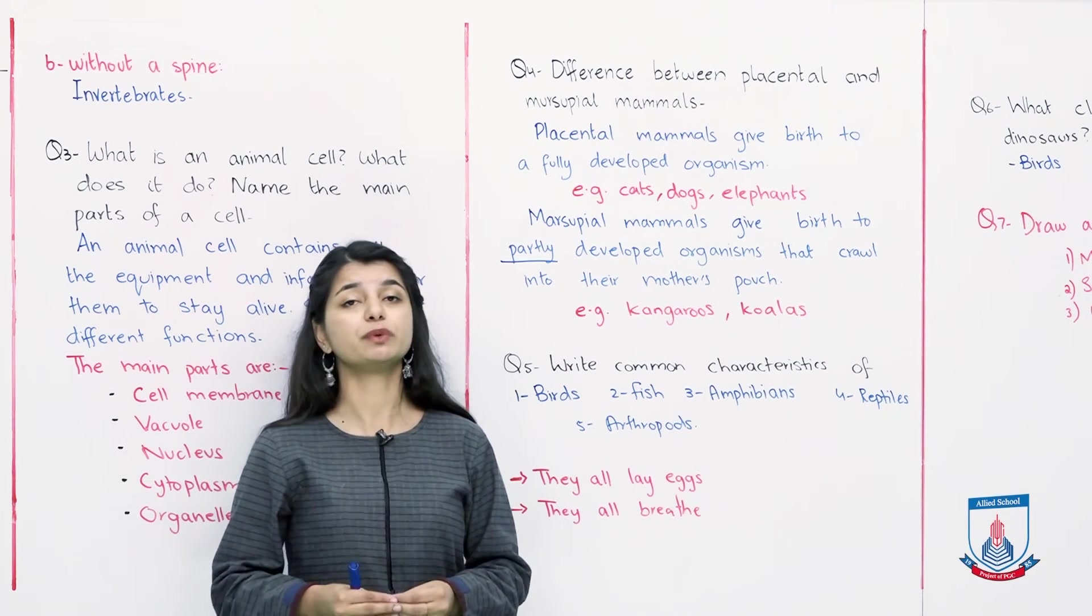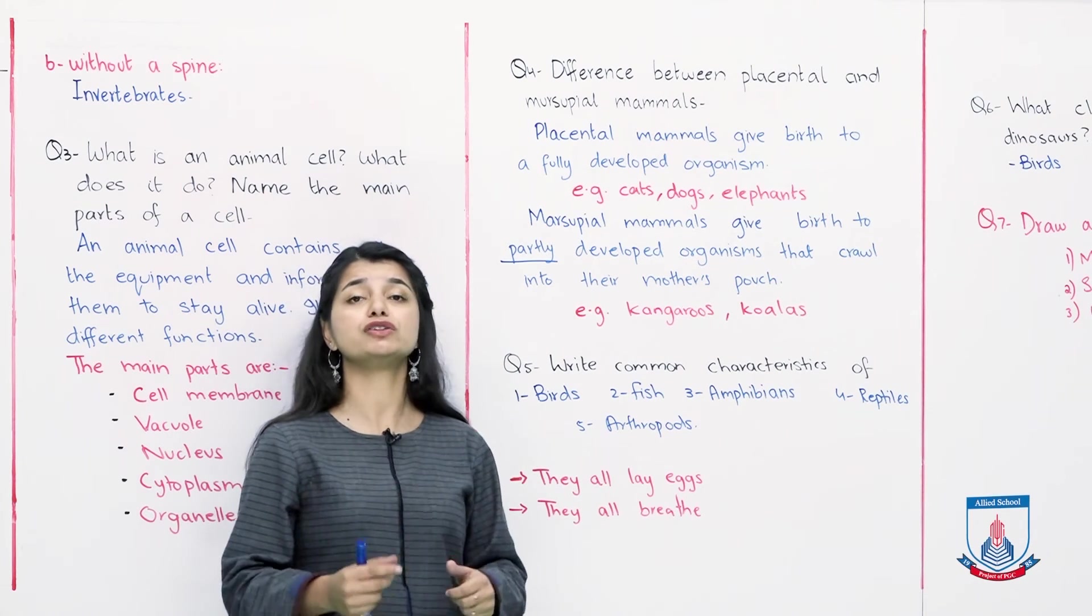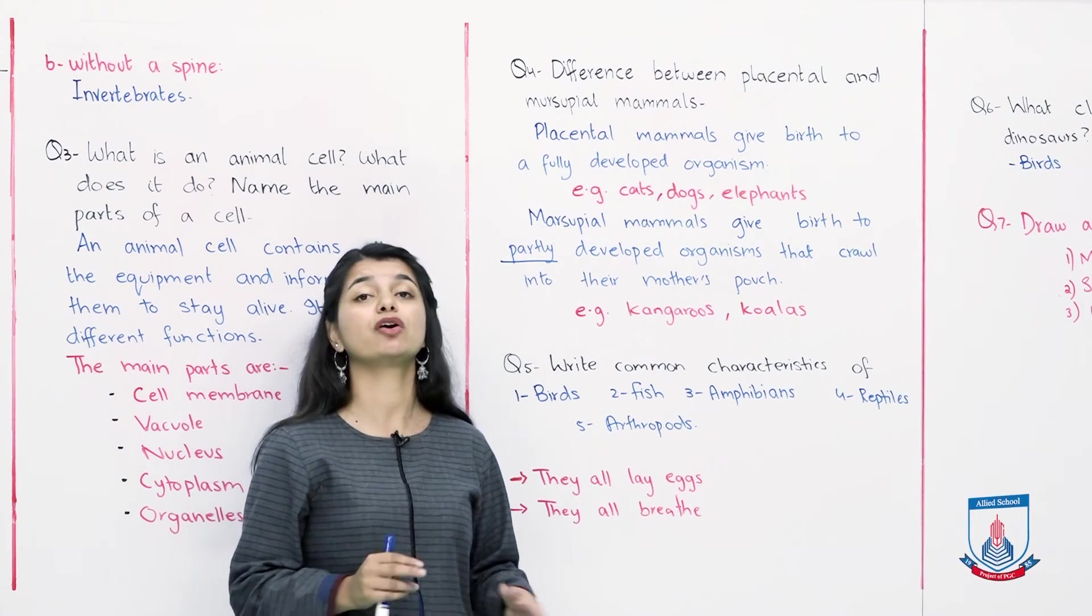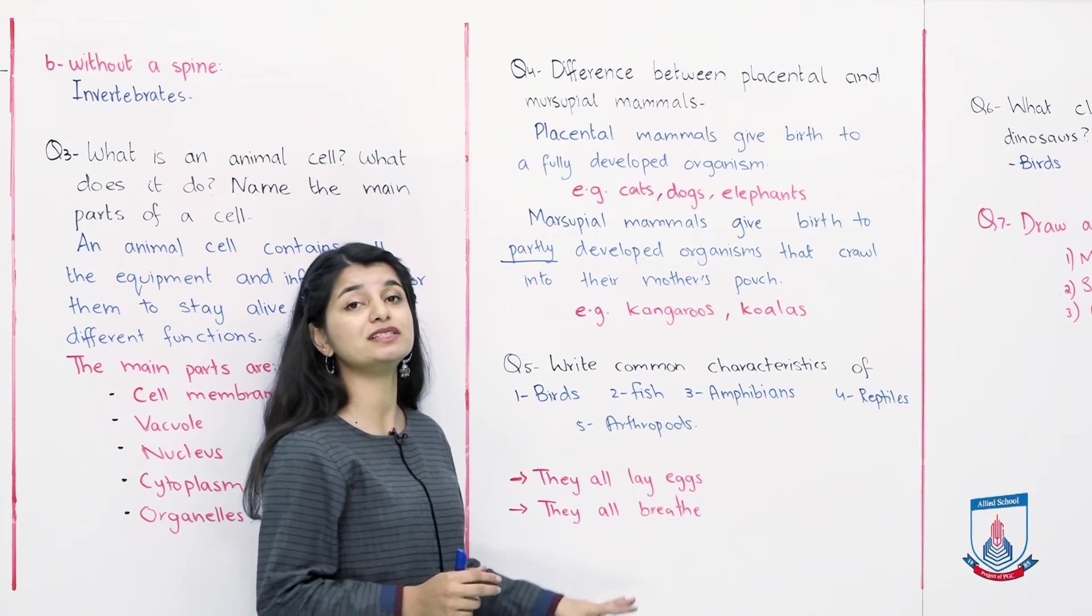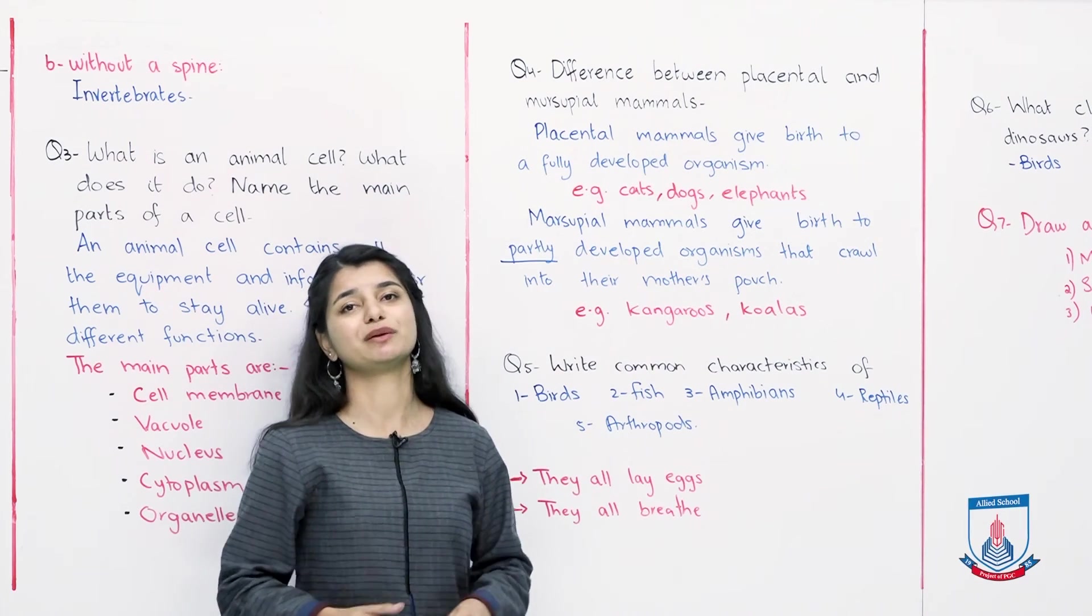So that was it for this question. If you have any other characteristics that are common among all of these, you can also do a Google search quickly and see which characteristics are in these different types of animals. Once you are done with that, we will proceed to question number 6.